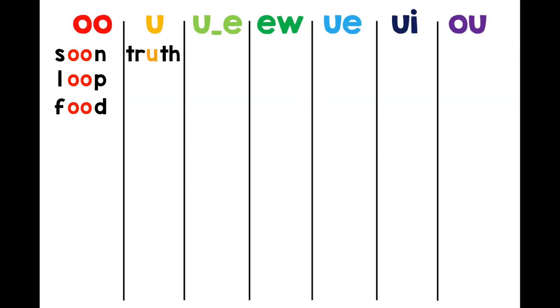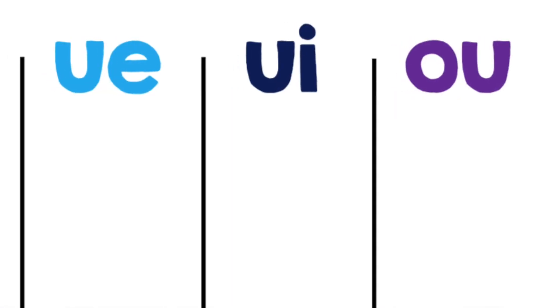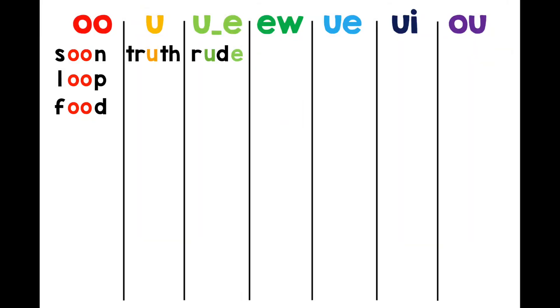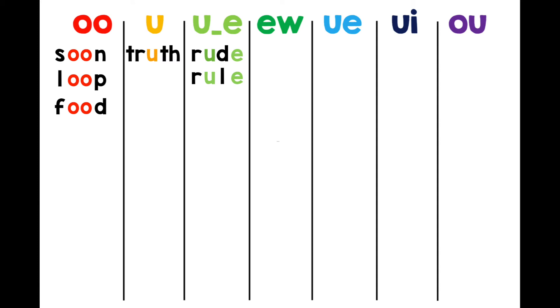Next, we'll move on to the U by itself. It also makes the sound OO. Truth: T-R-U-T-H. We also get OO spelled U, a consonant, and a silent E. Rude: R-U-D-E. Rule: R-U-L-E.